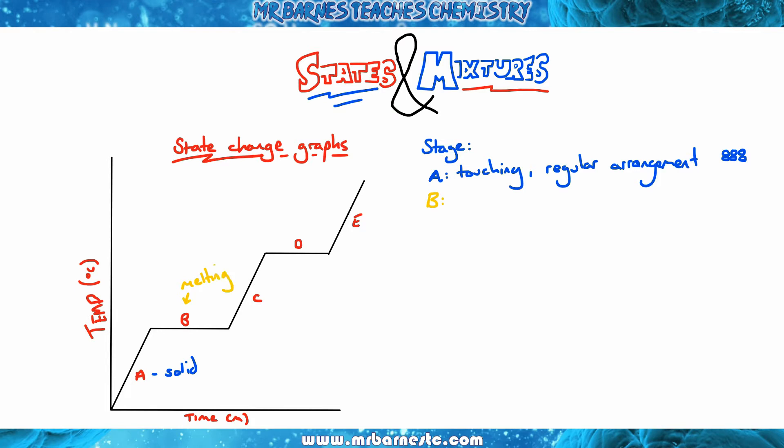At B, that's where melting is occurring. The temperature has not increased—it stayed the same. The reason for that is the energy is not being used to increase the temperature; it's being used to weaken the intermolecular forces, the forces between the molecules.